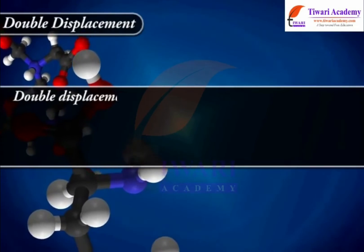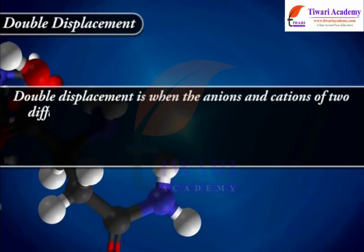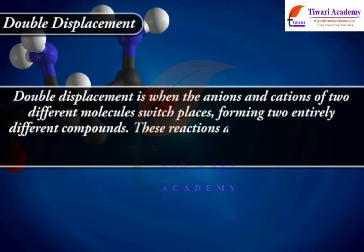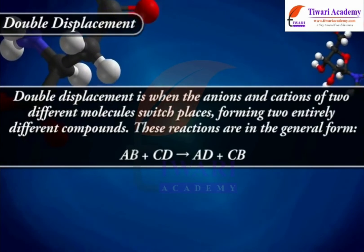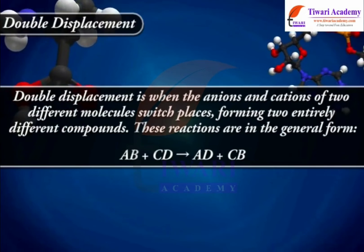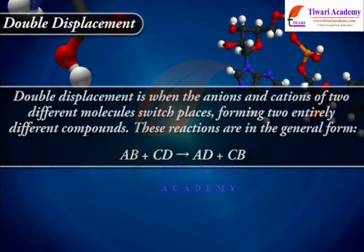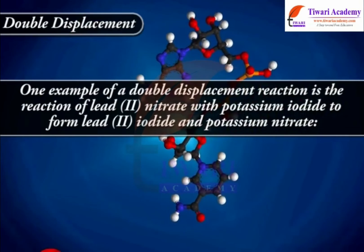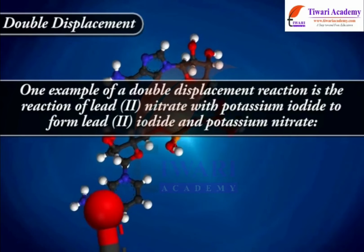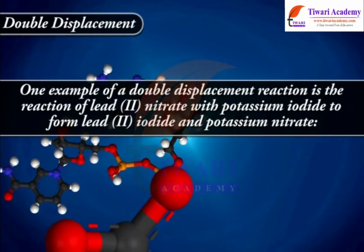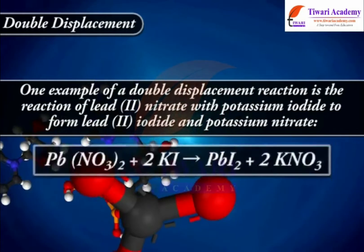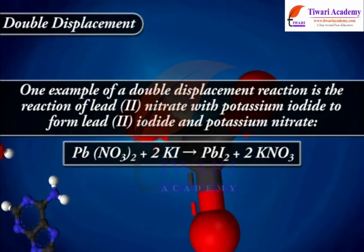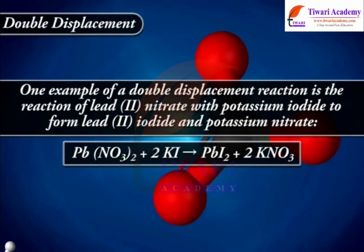Double displacement is when the anions and cations of two different molecules switch places, forming two entirely different compounds. These reactions take the general form AB + CD gives AD + CB. One example is the reaction of lead(II) nitrate with potassium iodide to form lead(II) iodide and potassium nitrate: Pb(NO3)2 + 2KI gives PbI2 + 2KNO3.